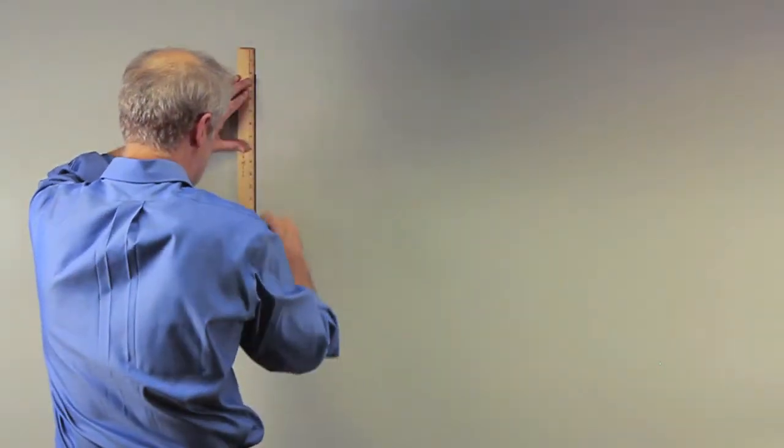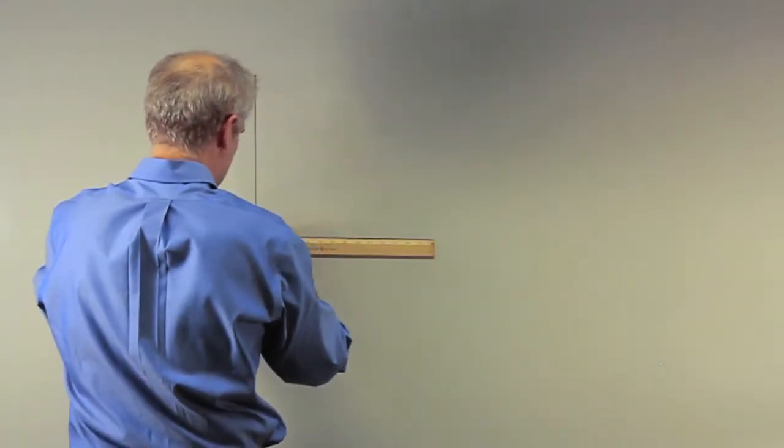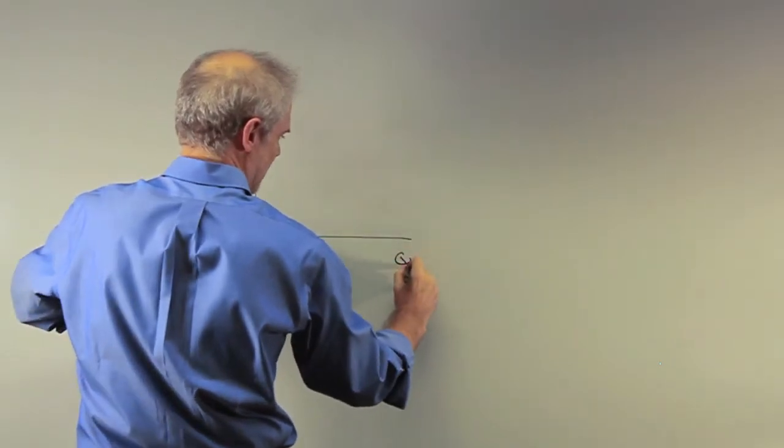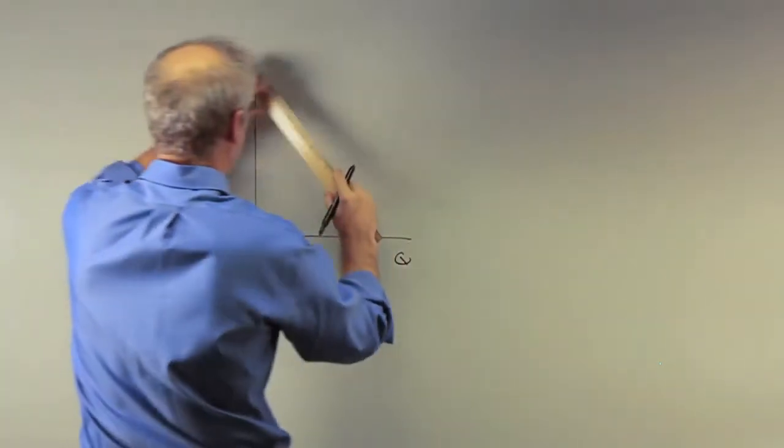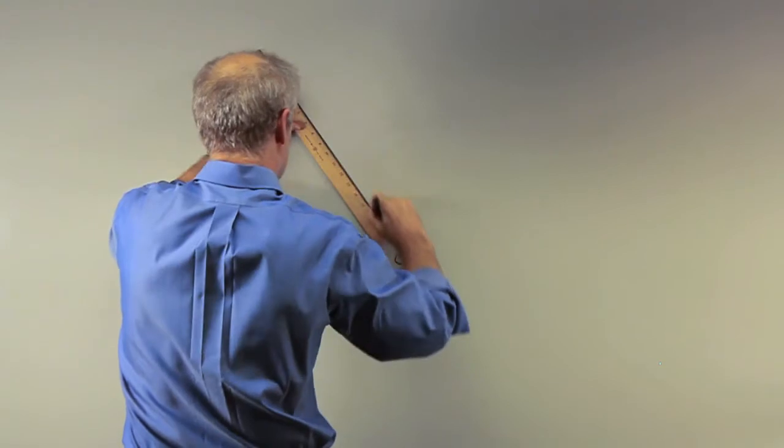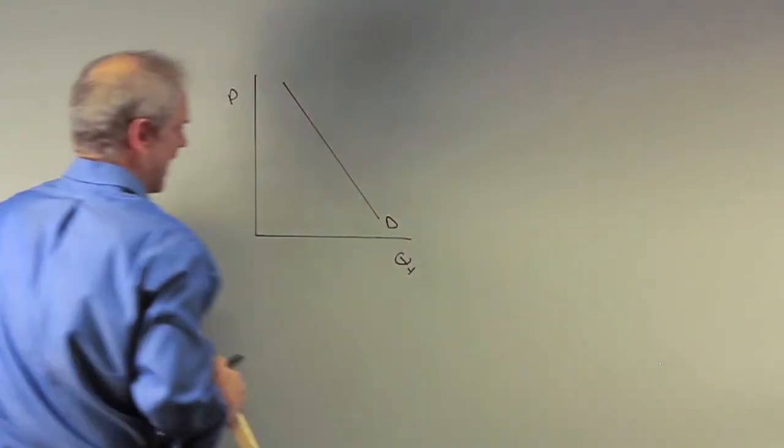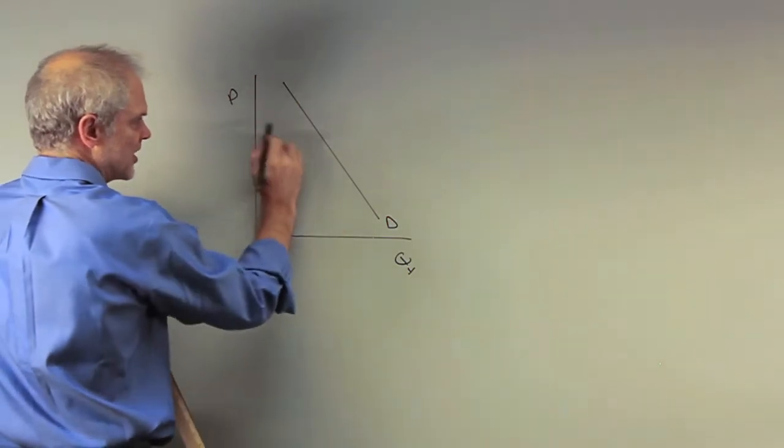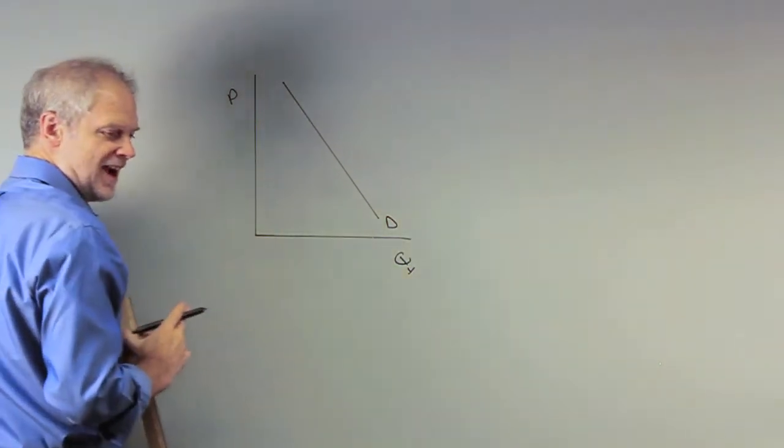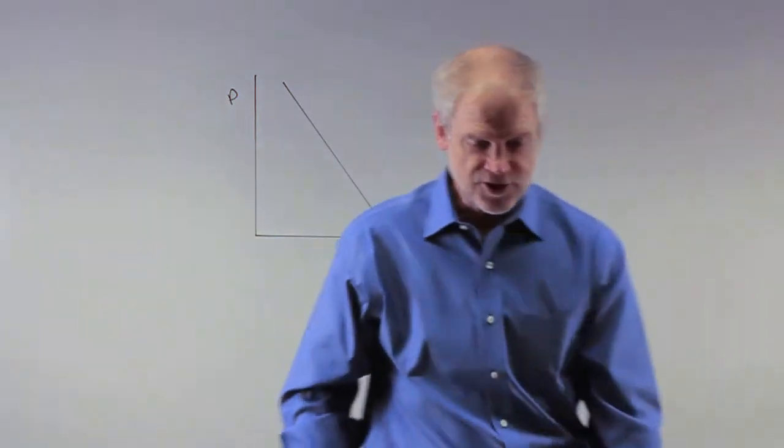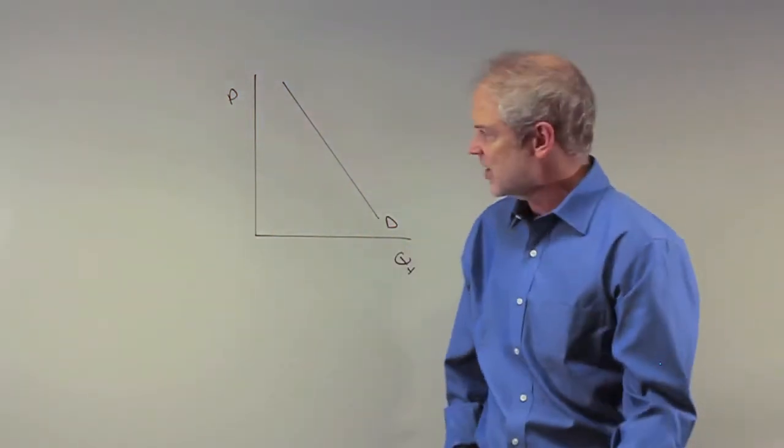Why? Because you've measured two things here: quantity and price of this particular good, good X. A movement along this curve is caused by a change in price. Everything else is going to shift the curve.